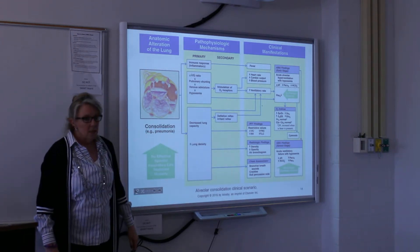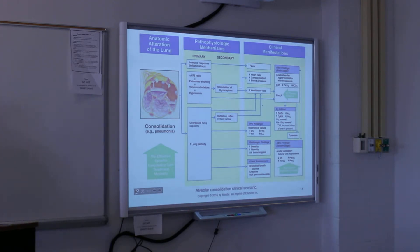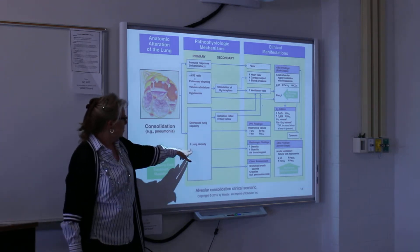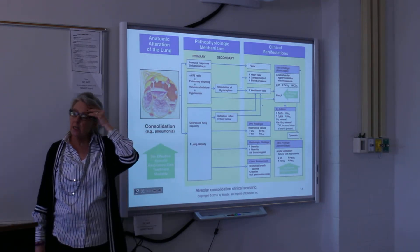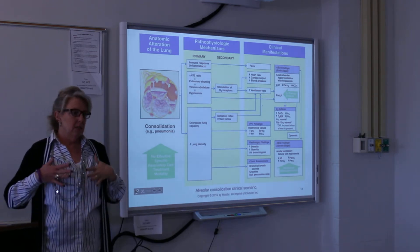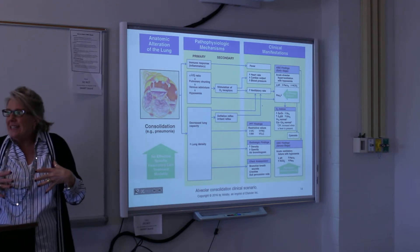Decreased lung capacity makes this a restrictive lung disease — all the volumes are going to be decreased. Increased lung density means on the chest X-ray you will see wider, more dense areas.